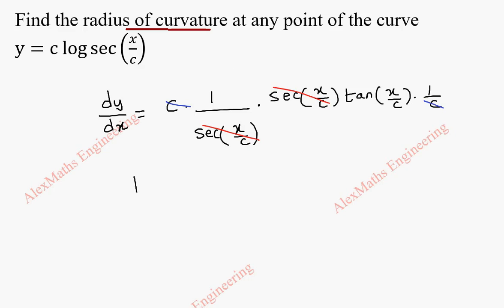So finally we have dy/dx as tan(x/c). Now its differentiation for the second time will be sec²(x/c) by chain rule, into 1/c.